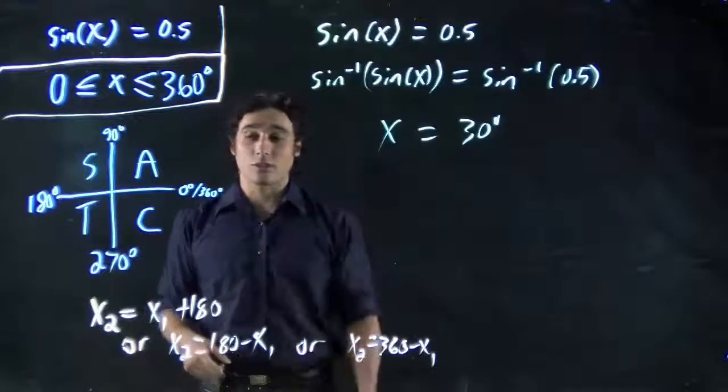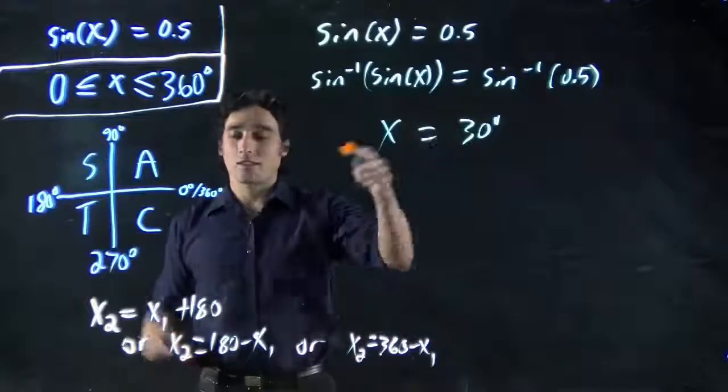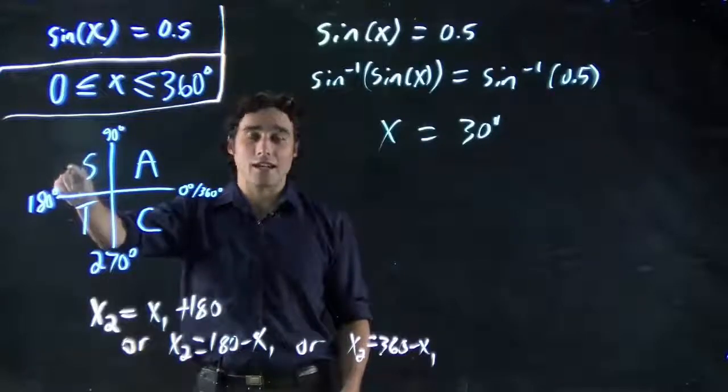360 minus 30, 330. Puts me here. Sign's not positive. 30, or 180 minus 30. Oh, that's 150. That puts me in the right area.